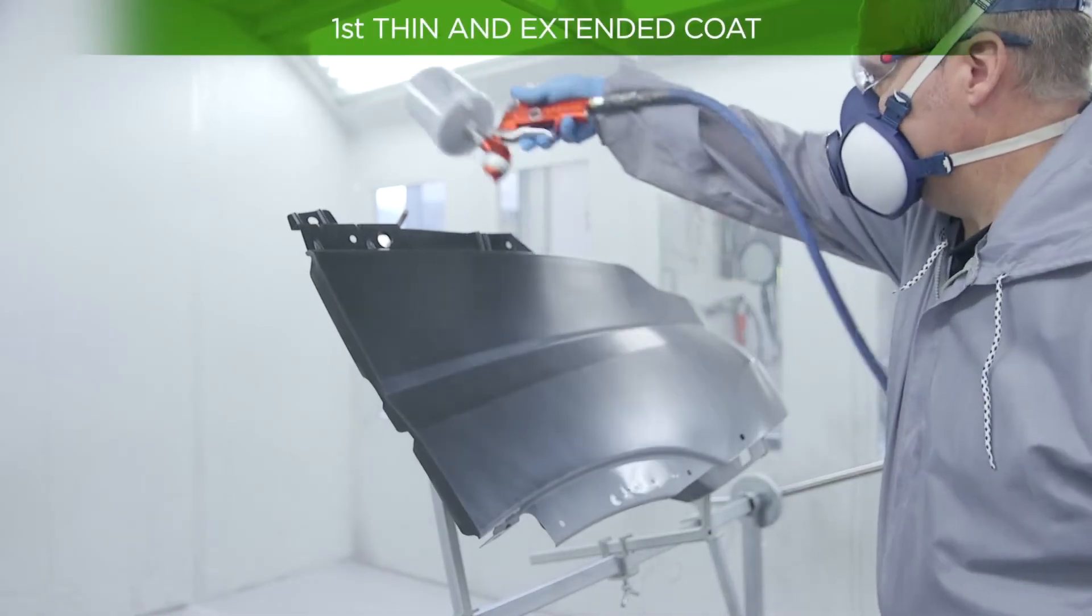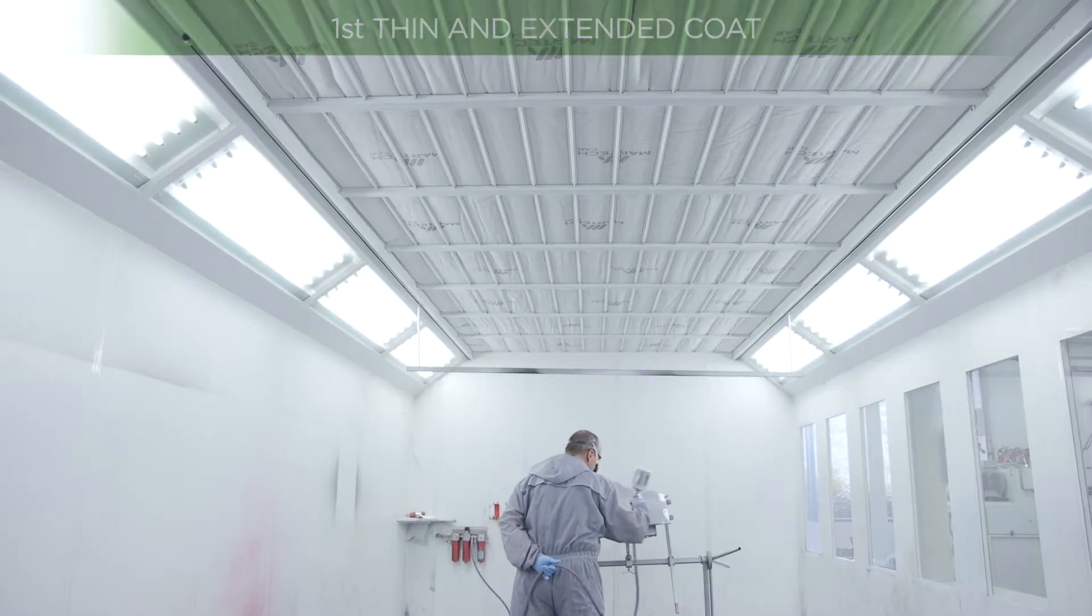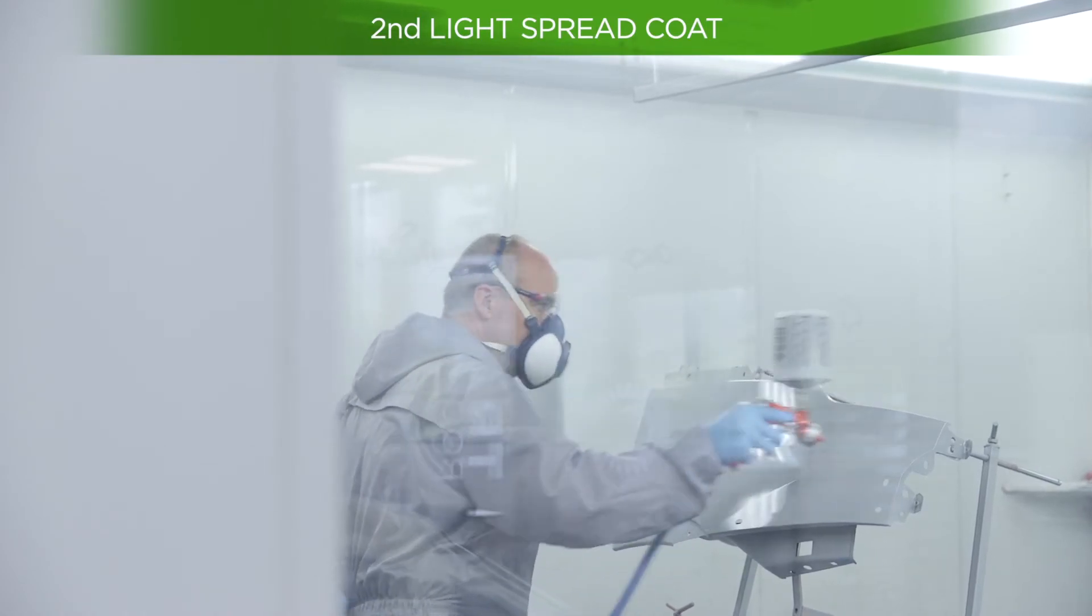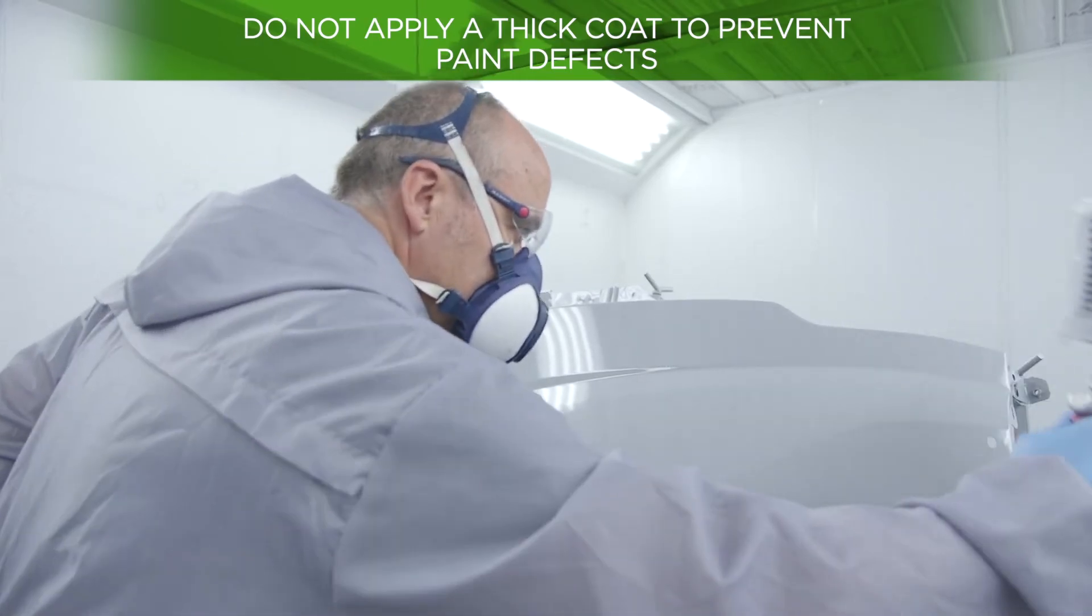First, apply a thin and extended coat that covers the whole part. After five minutes, apply a second light and spread coat. It is advisable not to apply a thick coat to prevent dimples or other losses in the finish.